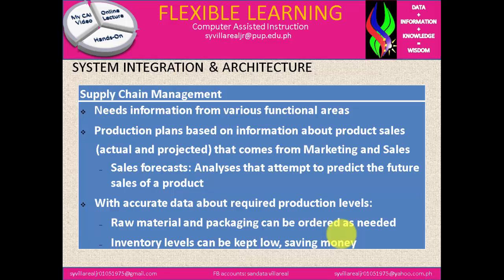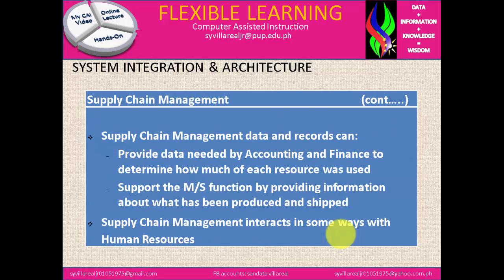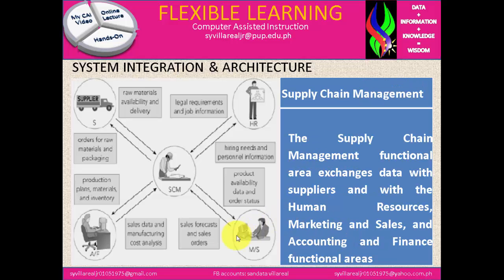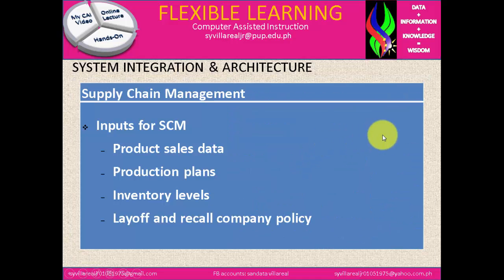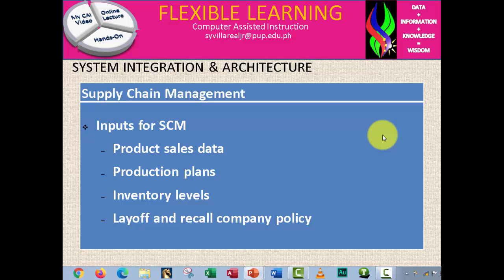With accurate data about the required production level, raw materials and packaging can be ordered as needed, and inventory levels can be kept low, saving money. Supply chain management data and records can provide data needed by accounting and finance to determine how much each resource was used. SCM supports the marketing and sales function by providing information about what has been produced and shipped, and supply chain management also interacts in some ways with human resources. As shown in the figure, SCM is at the center, connecting to HR, accounting and finance, and suppliers. Inputs for SCM include: product sales data, production plans, inventory levels, layoff and recall, and company policy.